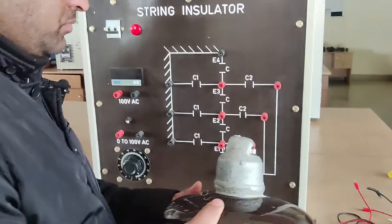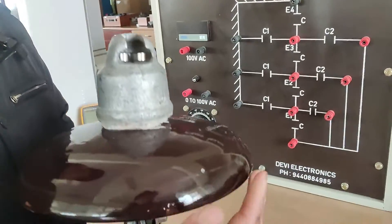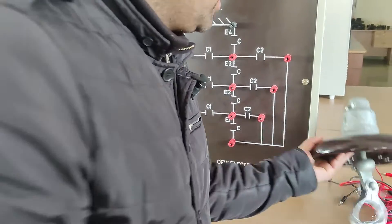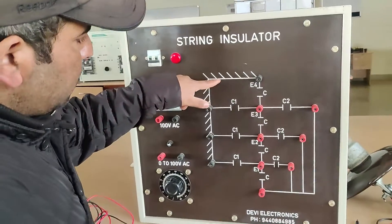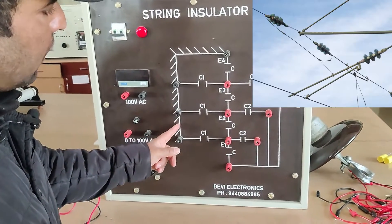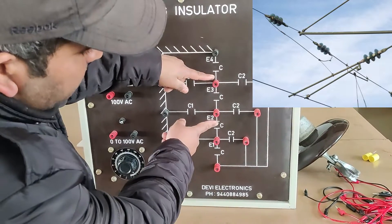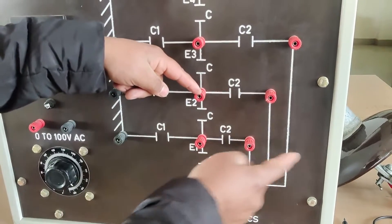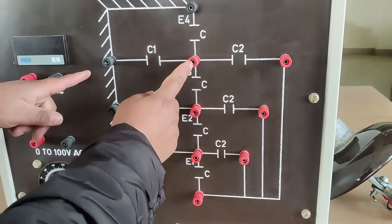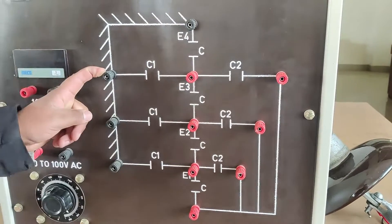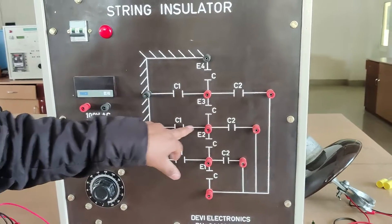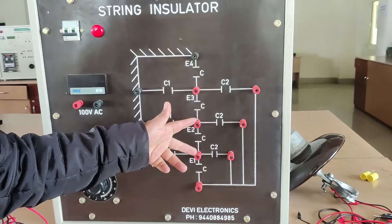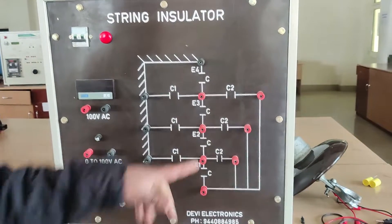Simultaneously, since this series of discs is connected on the other side to the cross arm of the tower structure, there exists a capacitance which we call earth capacitance. So we have two types of capacitances: the pin-to-pin capacitance, where the disc is the dielectric medium — that is the main capacitance — and another capacitance between the pin and the tower structure, which is the earth capacitance.